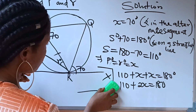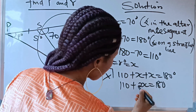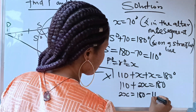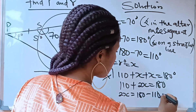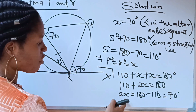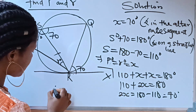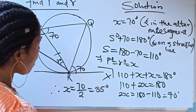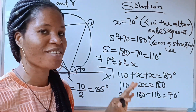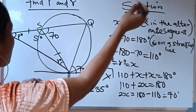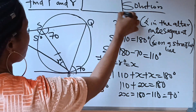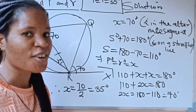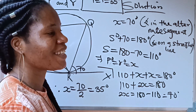Continuing: 2x = 180 − 110, so 2x = 70 degrees. Therefore x = 70 ÷ 2 = 35 degrees. So our final answer is: p = r = 35 degrees. Do have a lovely day, bye!